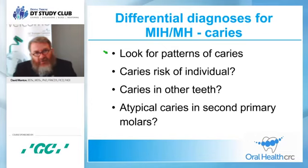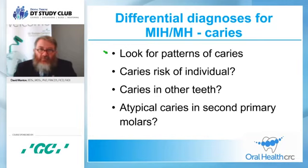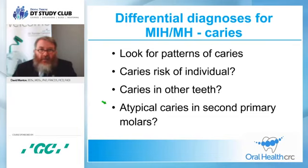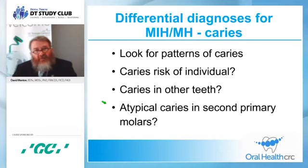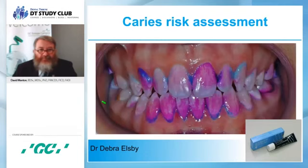If a child has low caries risk and affected first permanent molars, the first thought should be: are these sixes hypomineralized? Another giveaway is atypical caries in the second primary molars. Around 9–10% of children are affected with hypomineralized second primary molars, and there is a link between hypomineralized second primary molars and hypomineralized first permanent molars, because there is overlap in the developmental timing of these teeth.